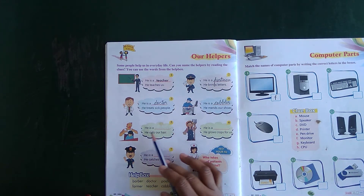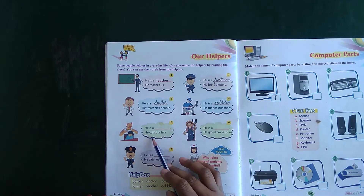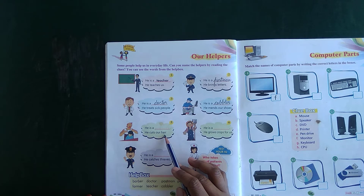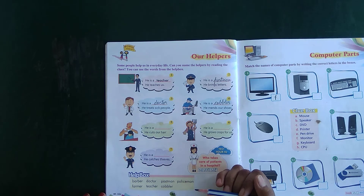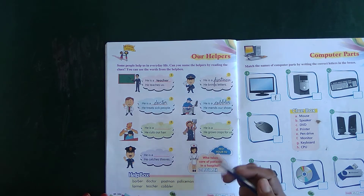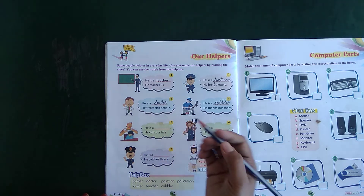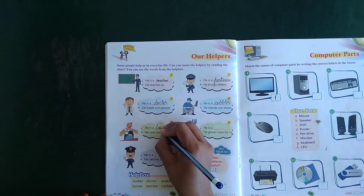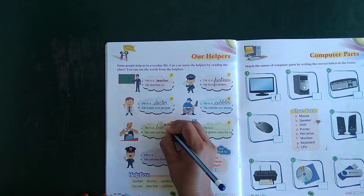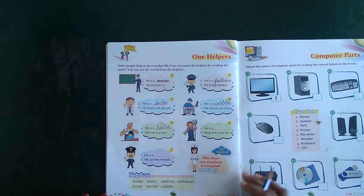Number five. He cuts our hair. Aapka hair kaun katta hai? Barber. Yeh kaun hai? He is a barber. B-A-R-B-E-R. Barber.